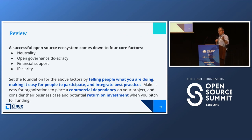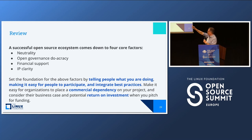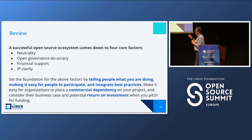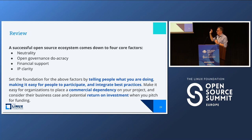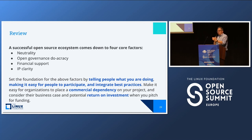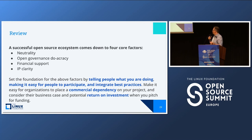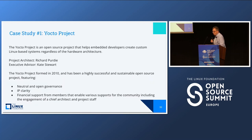To sum up: a successful open source ecosystem comes down to four core factors — neutrality, open governance, duocracy, financial support, and IP clarity. You can set the foundation for these four factors by telling people what you are doing, making it easy for people to participate, and integrating best practices and tooling. Make it easy for organizations to make commercial dependencies on your projects, and consider their business cases and potential return on investment when pitching for funding.